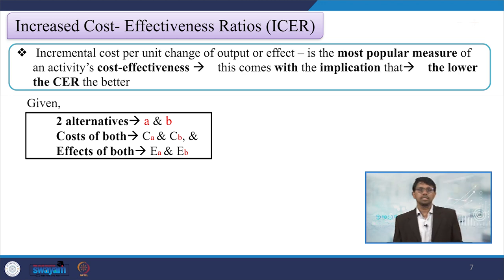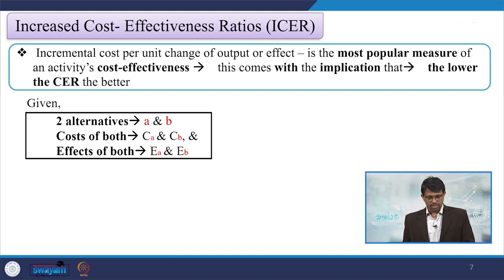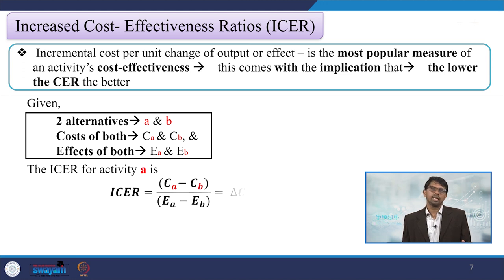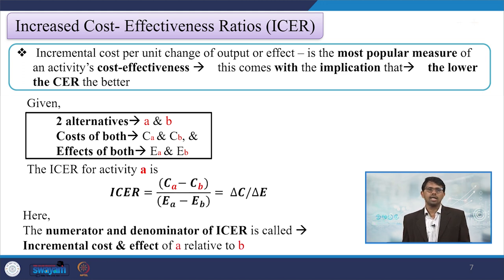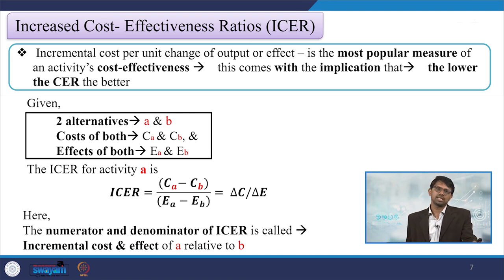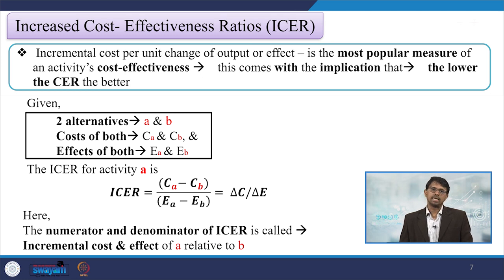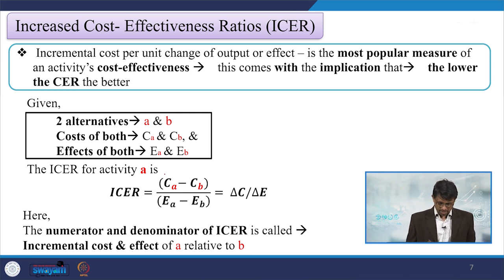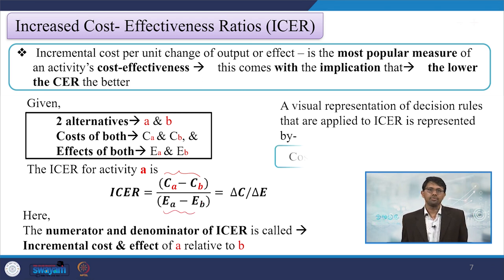Given two alternatives A and B, the cost of both would be C_A and C_B and their effects will be E_A and E_B. Hence, ICER is calculated as delta C divided by delta E — we are finding the change in cost with respect to the change in effect. So it is (C_A minus C_B) divided by (E_A minus E_B). The incremental cost and effects are actually measured.